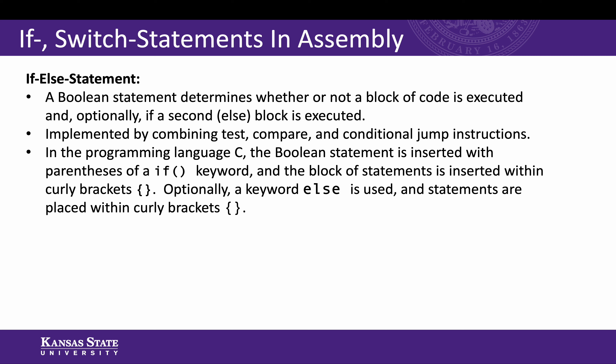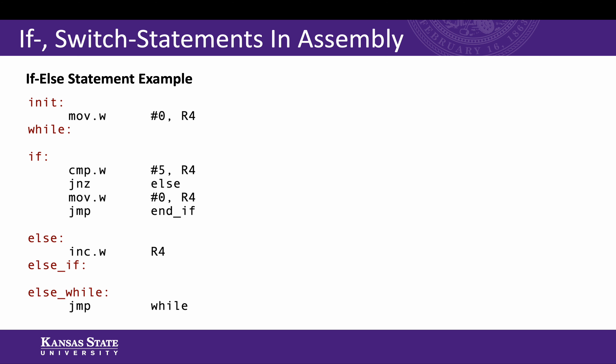In C, the boolean statement is inserted between parentheses of an if keyword and the block of statements is inserted within curly brackets — very similar to looping. Optionally we can use the else keyword, and then statements will be placed in curly brackets below the else keyword. We're going to start getting into C a little bit now as things become more complex, and we don't want to always be in assembly land. But let's take a look at this assembly example, walk through it, and then think about what it would look like in C.